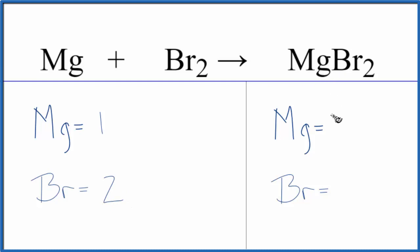Again, nothing written, we're going to assume that to be one. One magnesium, and then two bromine atoms.